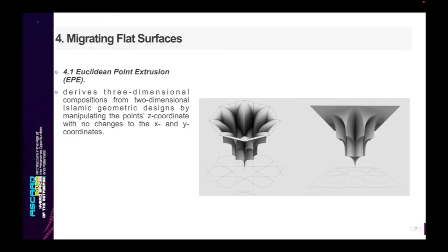This paper presents two methods by which Islamic geometric designs can be employed to derive three-dimensional compositions. These two methods are Euclidean point extrusion and curved surfaces fitting. The Euclidean point extrusion method derives three-dimensional compositions from two-dimensional Islamic geometric designs by manipulating the point's z coordinate with no changes to the x and y coordinates. Mukarnas is an example of this method. The challenge lies primarily in filling the gaps that may result with appropriate form, hence the curves shown in this figure.